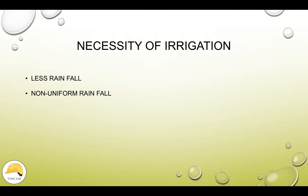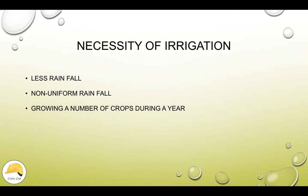One point is Non-Uniform Rainfall. Non-uniform rainfall is the correct amount of rainfall at the right timing. We can store the irrigation system. This technique is commonly used in India. One point is growing a number of crops during a year — we will be growing a number of crops during the year.